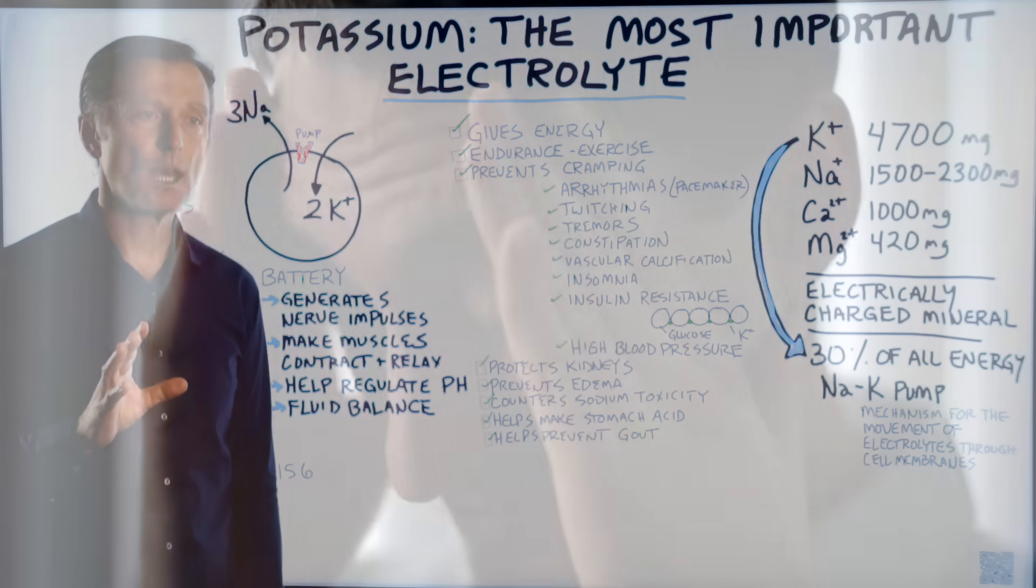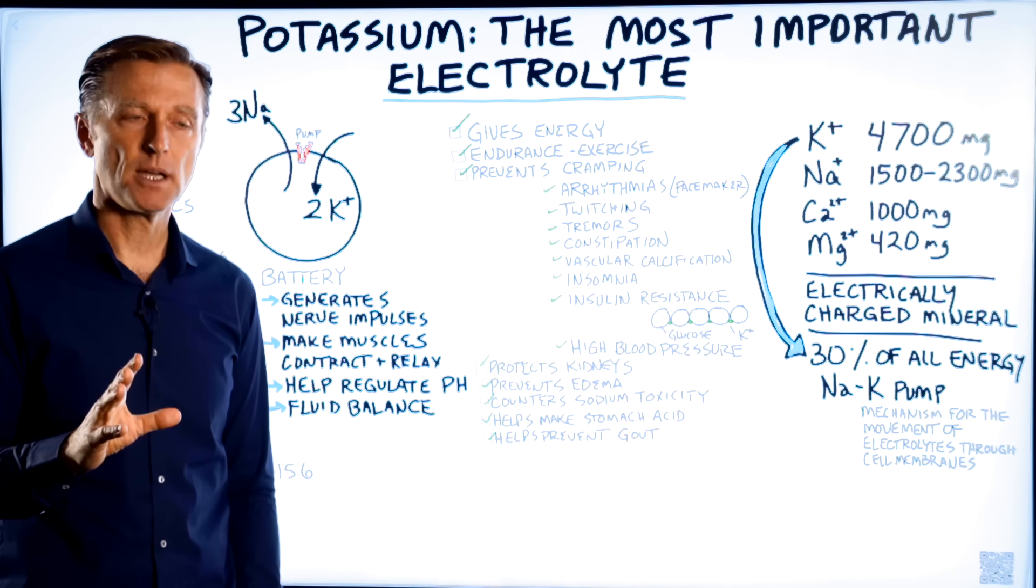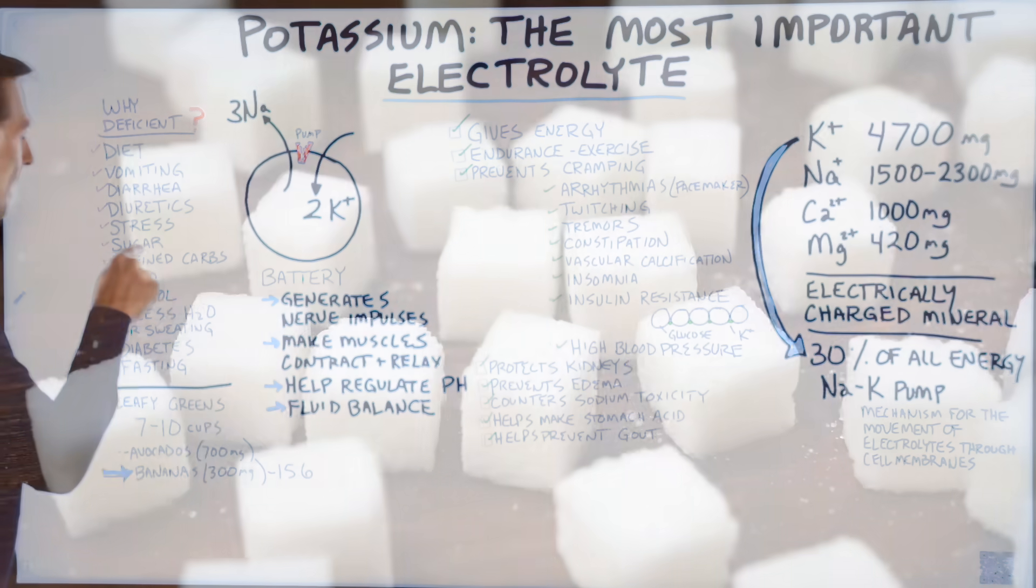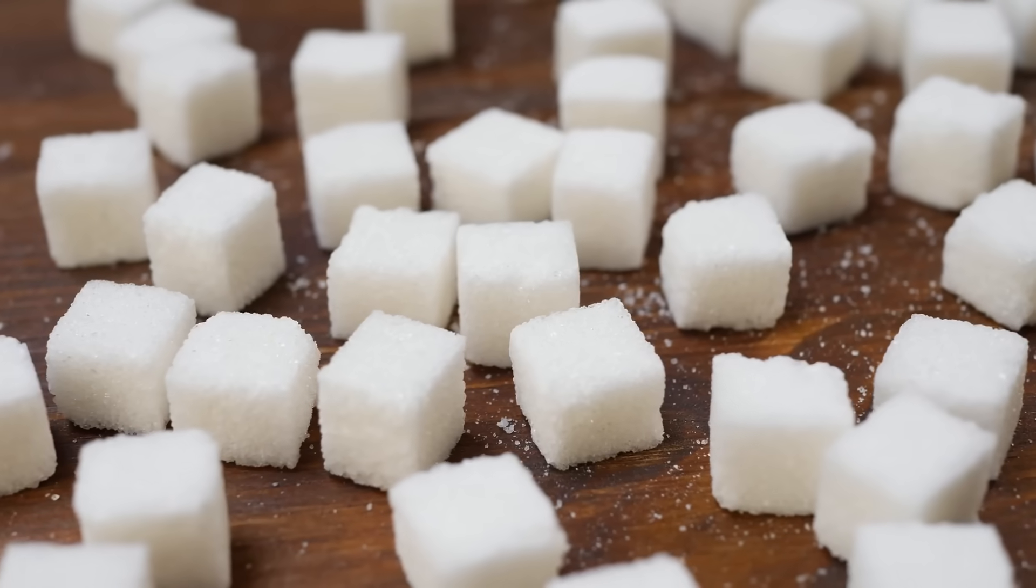Stress. When you have stress, you deplete your potassium reserves. And by the way, when you actually take potassium, it relaxes your nervous system. It pulls you out of this stress state. Sugar depletes your potassium.